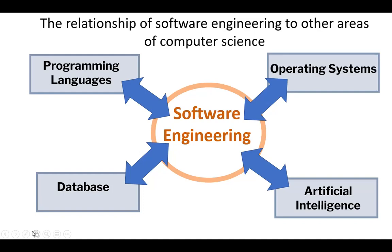The influence of operating systems on software engineering is quite strong because operating systems were one of the first large software systems built. Therefore, they were the first instances of software that needed to be engineered. Many of the first software design ideas originated from early attempts at building operating systems.